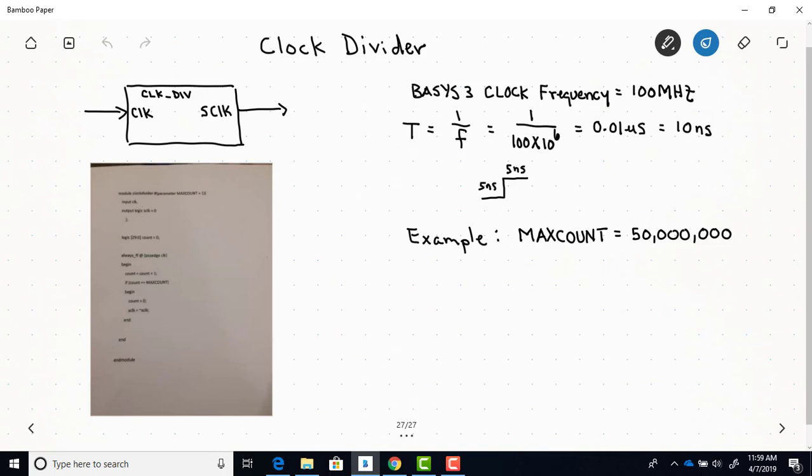So before we look in any detail of this code right here, the basis 3 boards that we're using in the lab, they have a board clock frequency of 100 megahertz, so that's 100 million hertz. And as you know, a period of a signal is just the reciprocal of frequency. So if you take the reciprocal of 100 megahertz, you get 0.01 microseconds, which is the same as 10 nanoseconds.